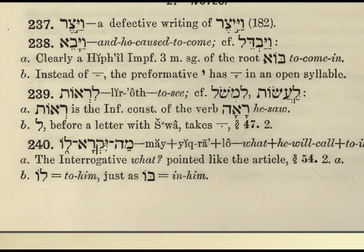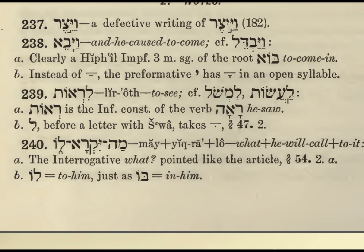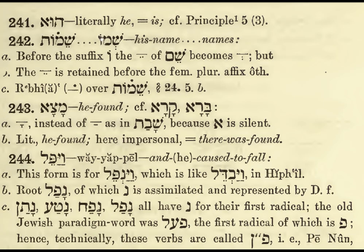Here we have a Dagesh after a vowel — Mah Yikra Lo — and you can see even in the translation the Yud is doubled: 'what he will call to him.' Here is the Etanach, the semicolon breaking the sentence into two parts. The interrogative 'what' is pointed like the article. 'Lo' meaning 'to him.' 'Hu' literally means 'he,' so it has the sense of the copula, the verb 'to be.'